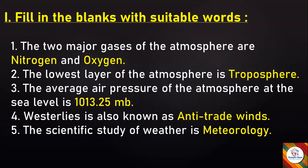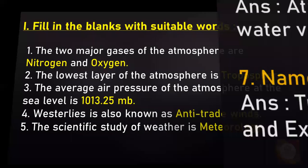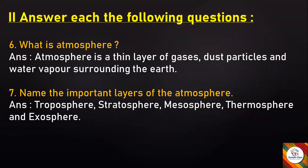This is the first main which we have finished. Now let's move to the second main: answer each of the following questions. The question numbers are continued as per your textbook. Question 6: What is atmosphere? Answer: Atmosphere is a thin layer of gases, dust particles, and water vapor surrounding the Earth. Question 7: Name the important layers of the atmosphere. Answer: Troposphere, stratosphere, mesosphere, thermosphere, and exosphere.